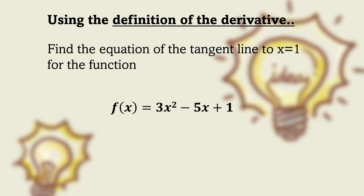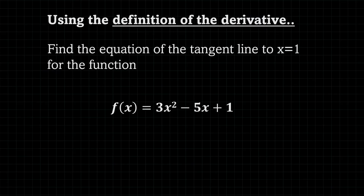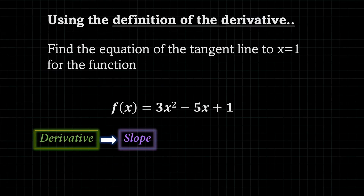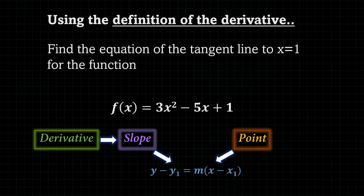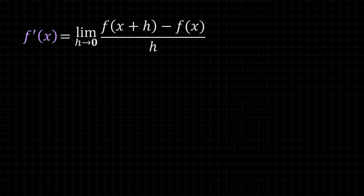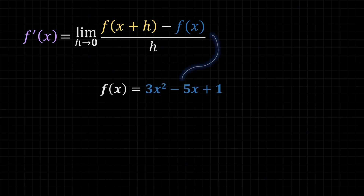The first example we're going to do is for a quadratic function. We're going to follow the procedure of first finding the derivative, then finding the slope, finding the point, and then with the point and the slope, we can find the equation of the tangent line in point-slope form. Starting with the definition of the derivative, we have to focus on the numerator. The f of x is easy because it's always given to us, so we can substitute this expression into f of x.